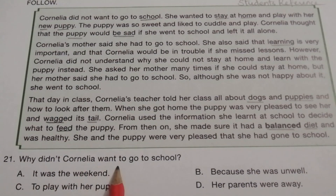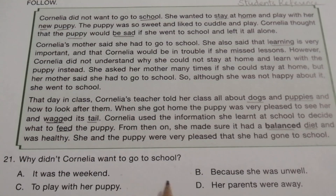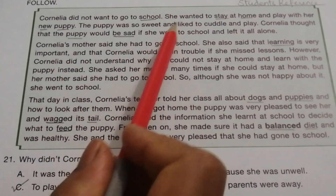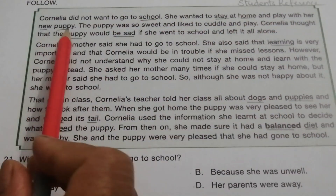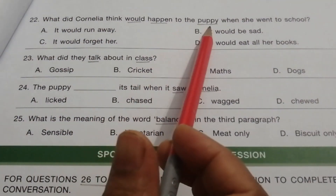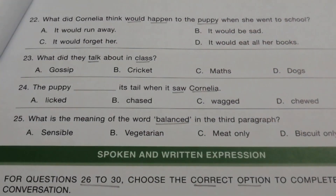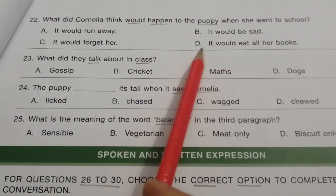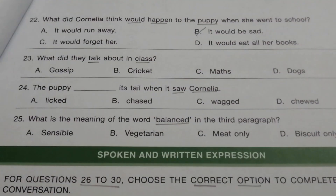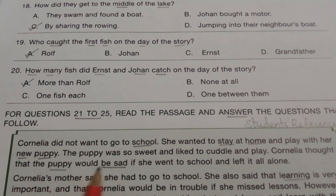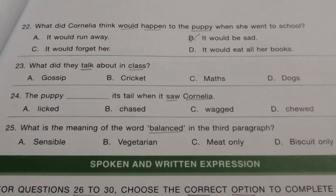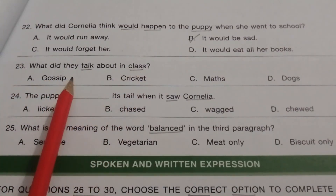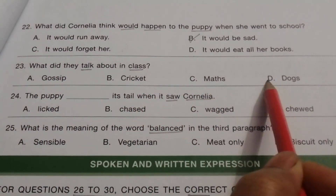Question 21: Why didn't Cornelia want to go to school? The answer is C — to play with her puppy. Question 22: What did Cornelia think would happen to the puppy when she went to school? The answer is B — it would be sad. Question 23: What did they talk about in class? The answer is D — dogs. The teacher told the class all about dogs, puppies, and how to look after them.